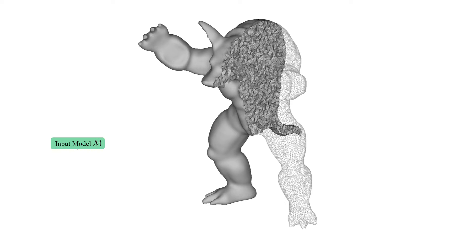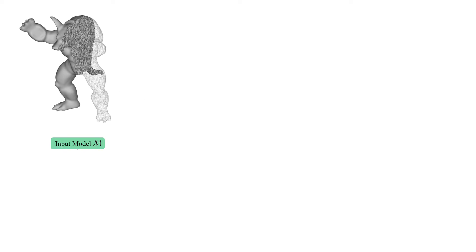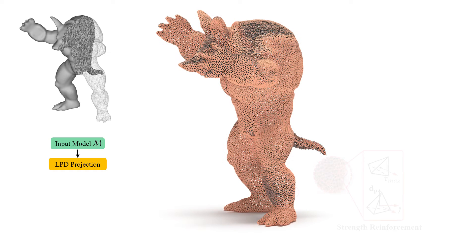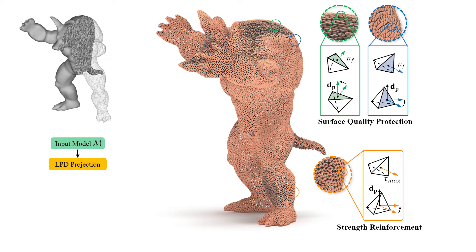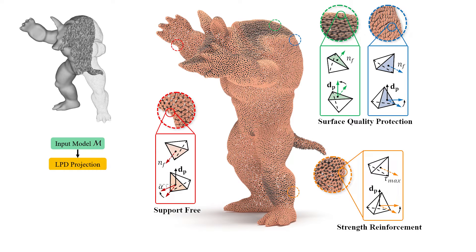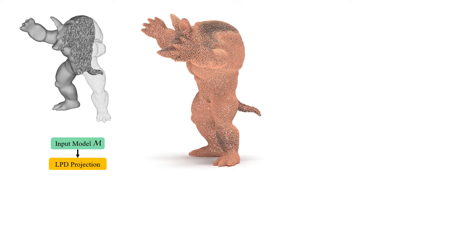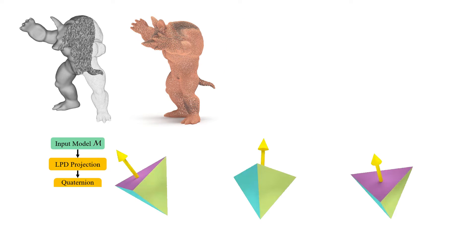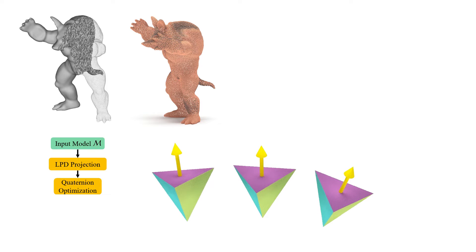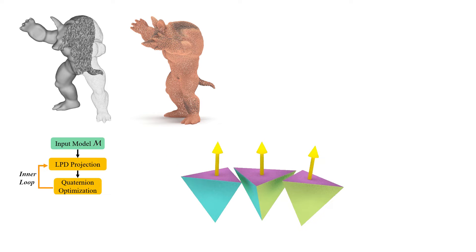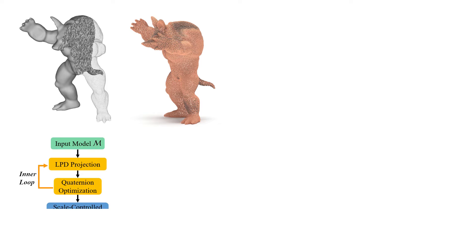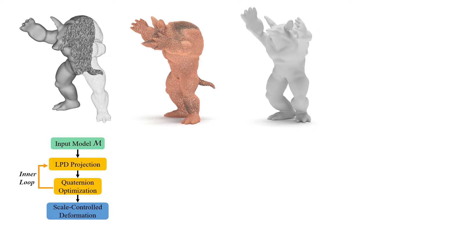Models are represented by tetrahedral meshes in our computational pipeline. In the first step, each element is rotated to follow the desired local printing directions that satisfy design objectives. Here we show a discrete status of rotating neighboring elements. Then the local rotations are transformed to a quaternion field where the compatibility is optimized.